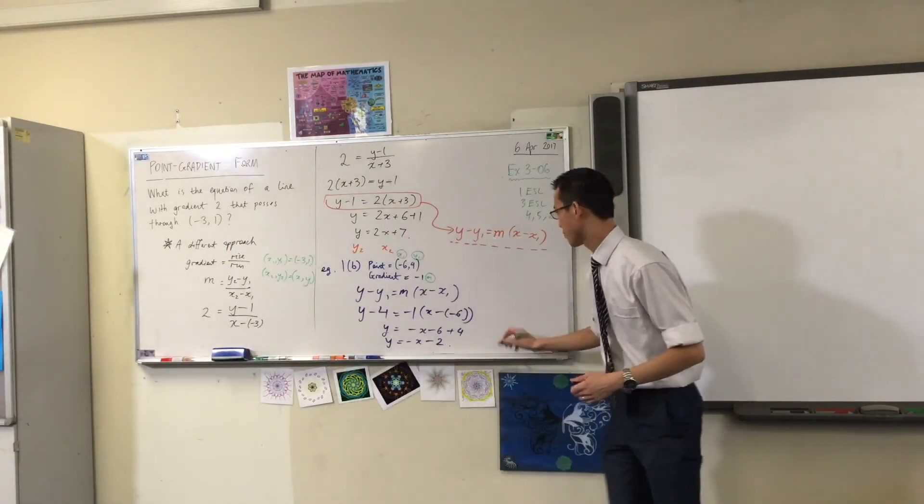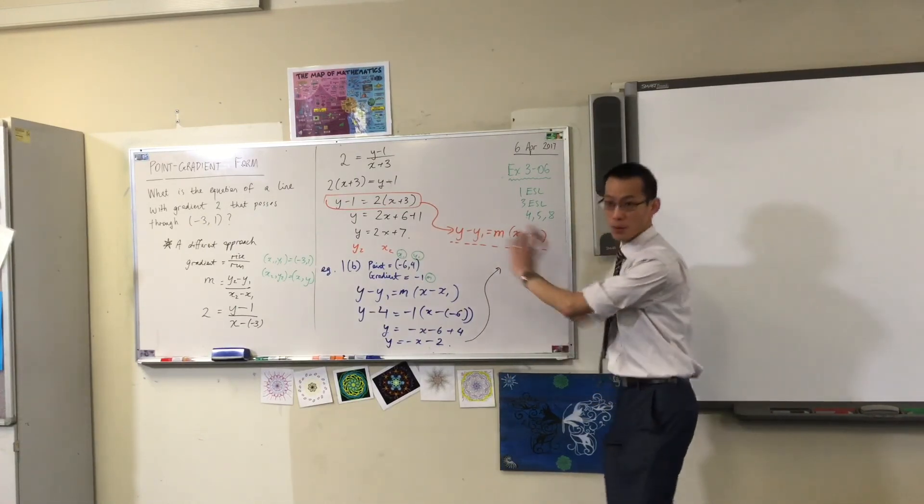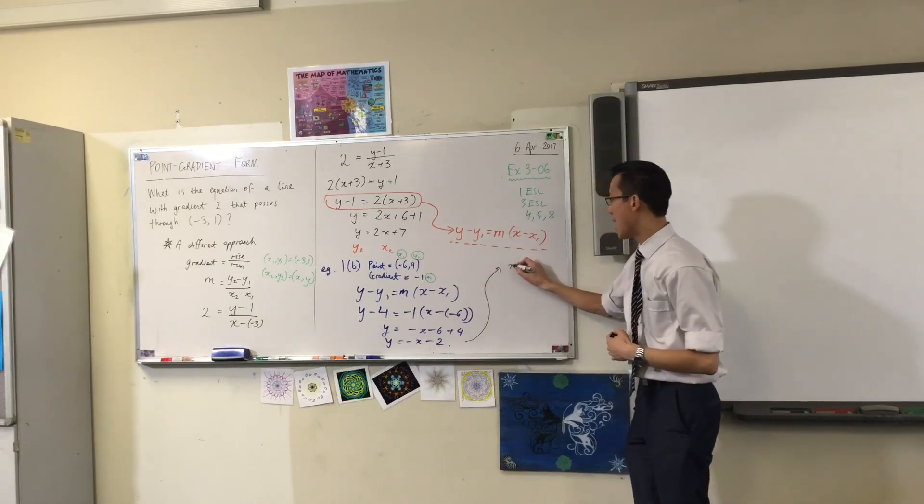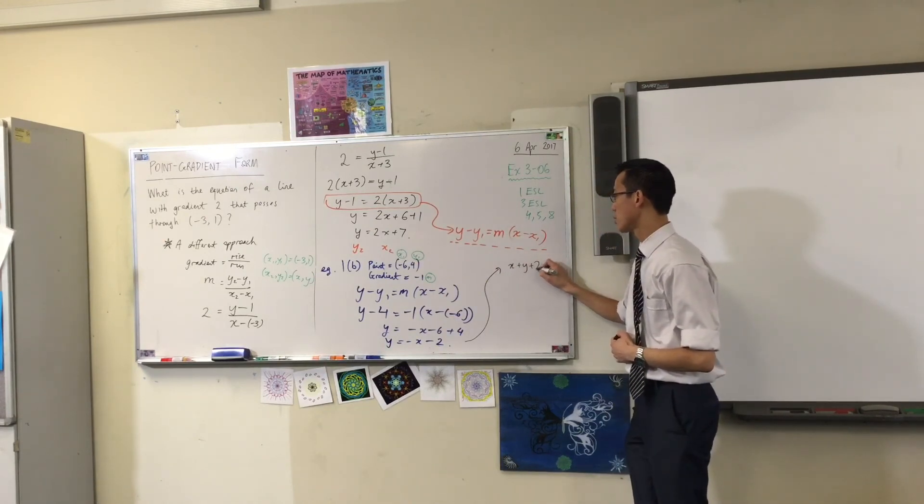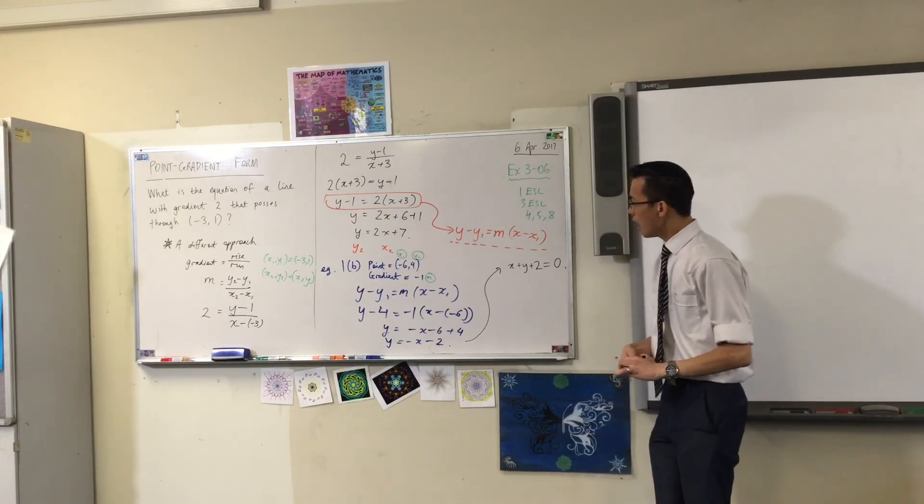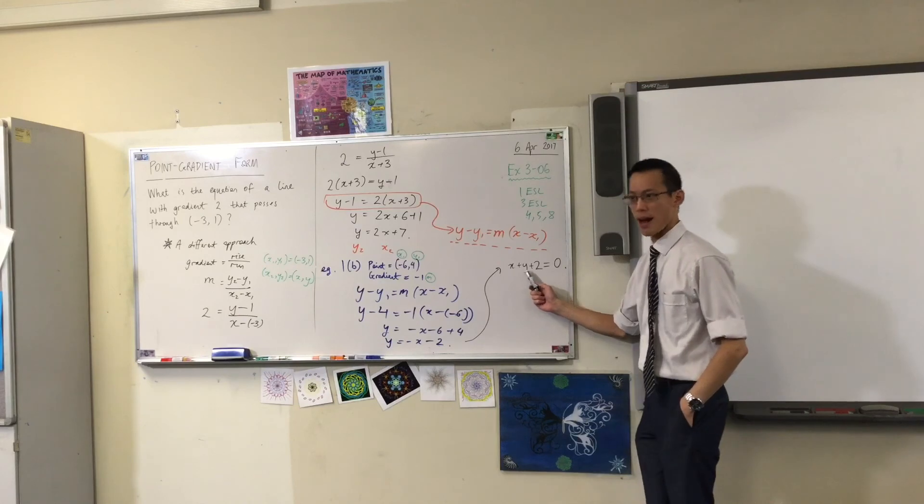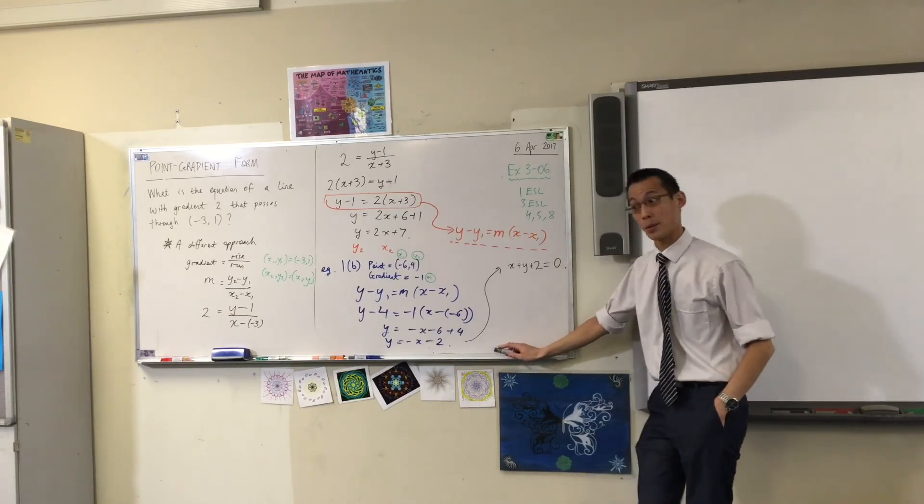Bring everything to the left side. Yeah, I just want zero on the right hand side. So I'm going to cut everything from the right to the left. That means I'll add x and I'll also add two. It doesn't matter what order you would have. It really doesn't matter, but usually it's x plus by plus c. That's the order you'll see most frequently.